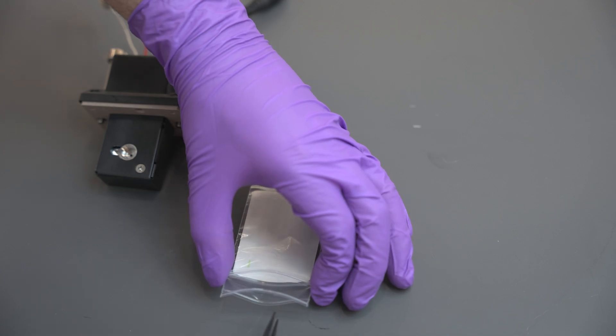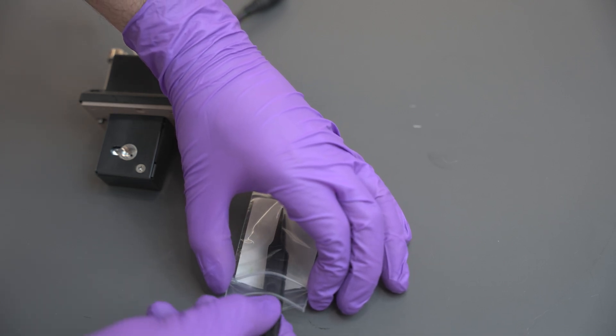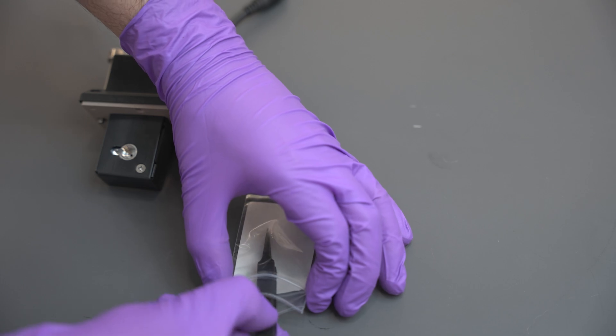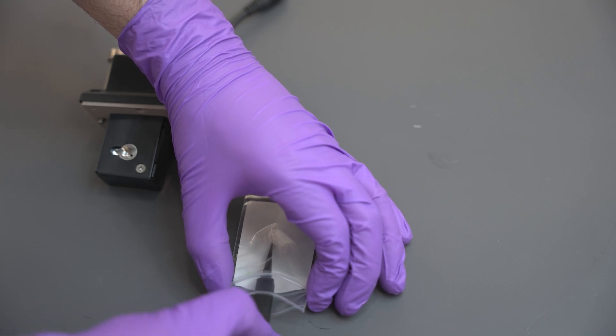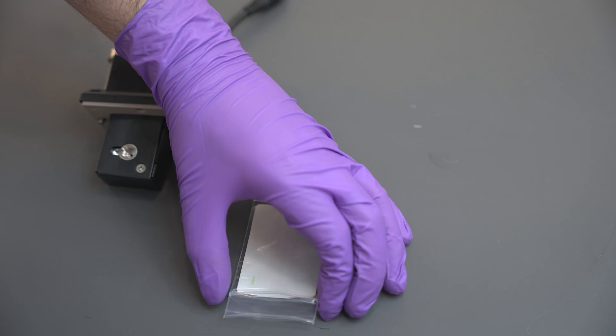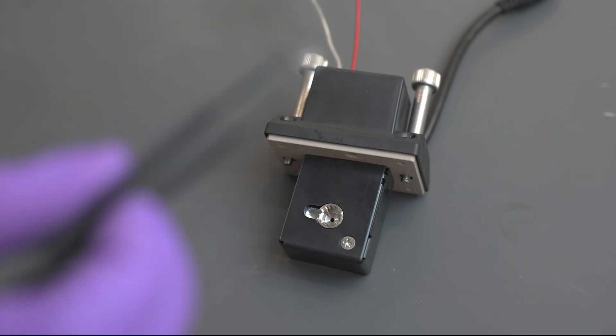Remove the lenses from their packaging with the plastic tweezers and set them on a clean piece of wiping paper. Carefully remove one gasket from the packaging with the plastic tweezers and place it directly into the flow cell housing.